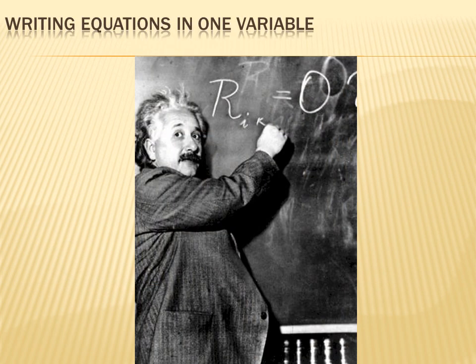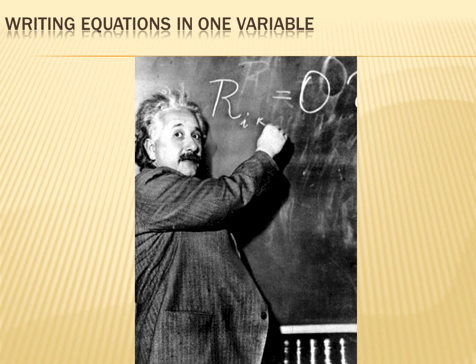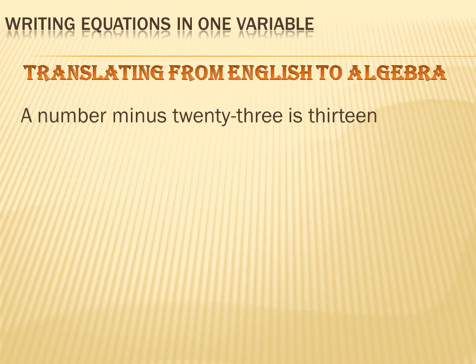Today we're going to talk about writing equations in one variable. One variable means there's only one variable in the equation, and it doesn't take an Einstein to figure this out — especially if you use some good techniques to convert the word problem into an algebraic expression or equation. The first thing you need to learn is to translate from English to algebra. It's kind of like learning to speak French — we have to simplify the words written in the problem into algebra or symbols to represent those words.